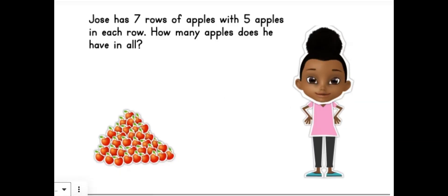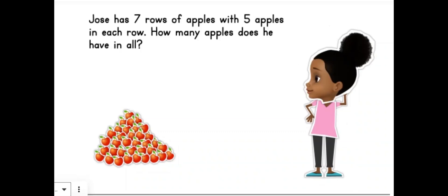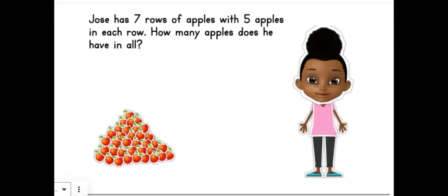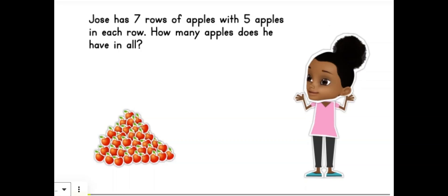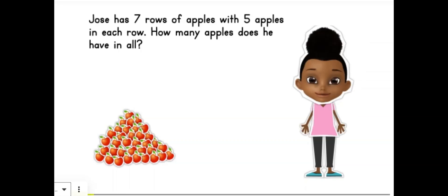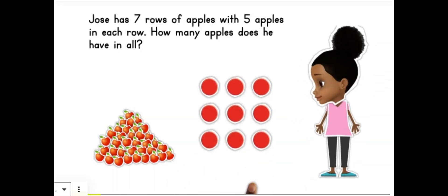Hey, Jada. How's it going with that word problem? I'm getting there, but I could use some help. Why don't you use an array to help you solve the problem? Sounds good. But what's an array? An array shows objects in equal rows and columns.